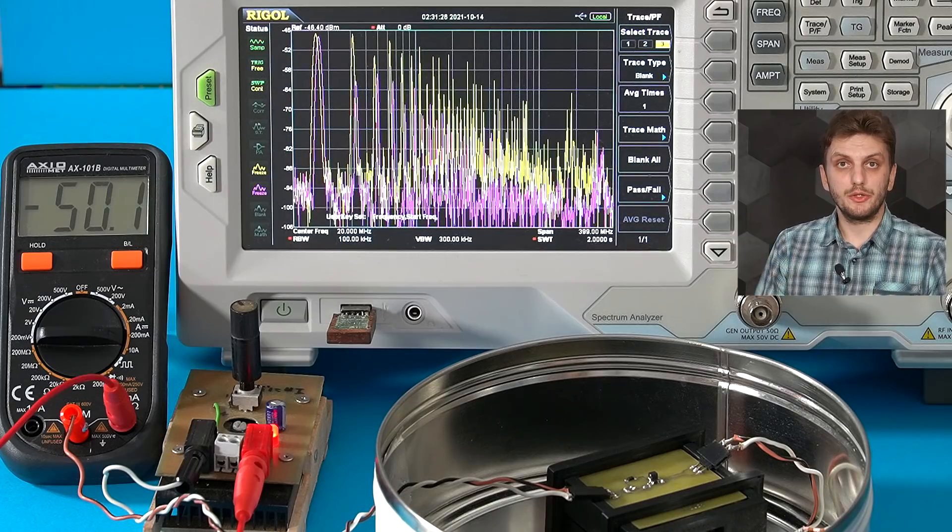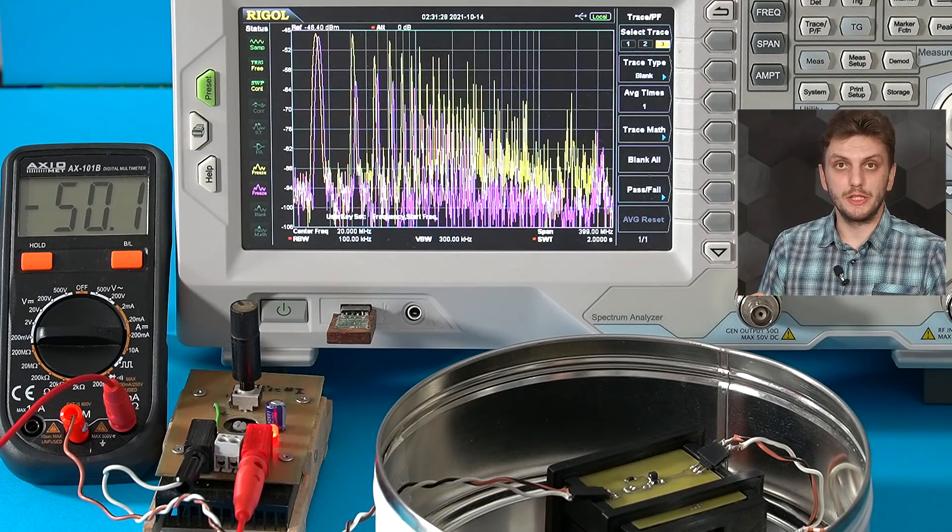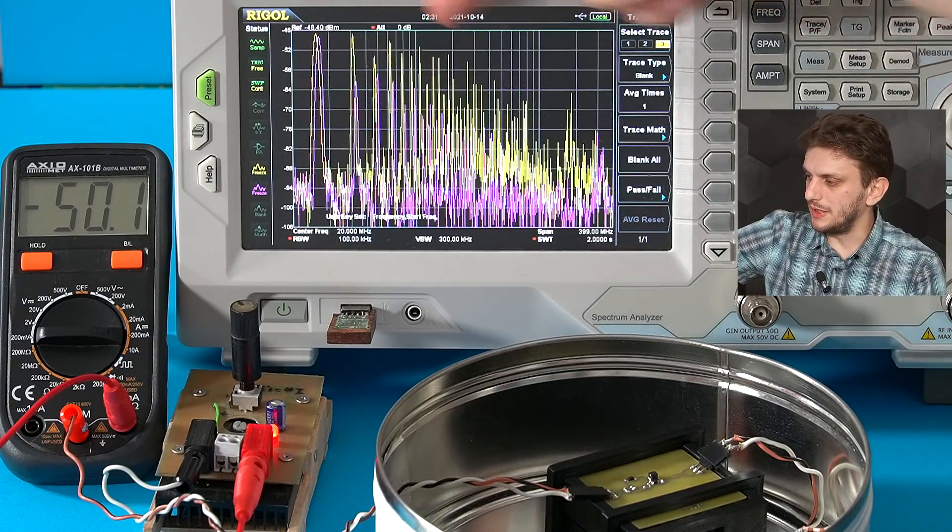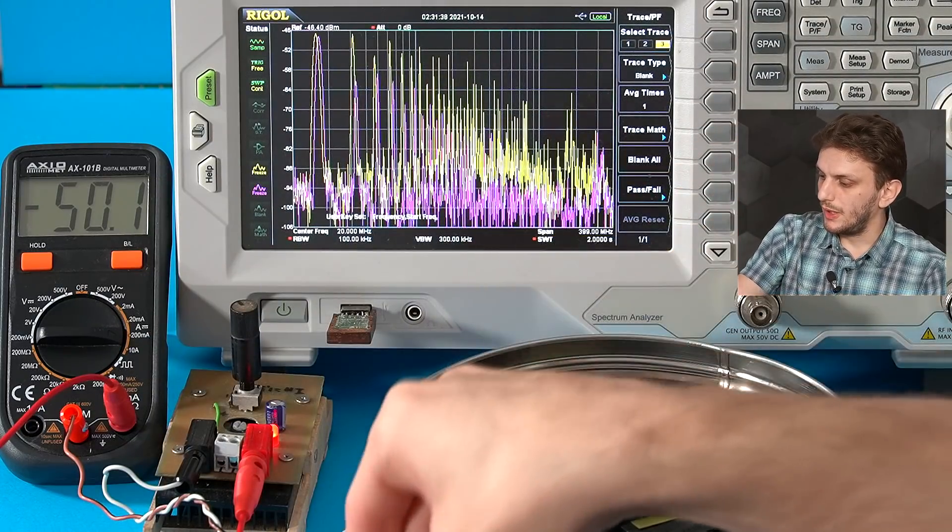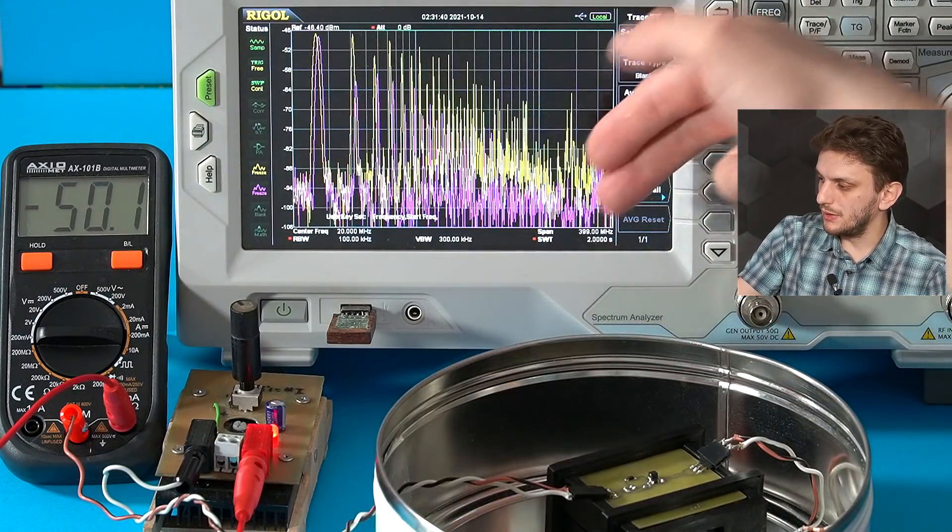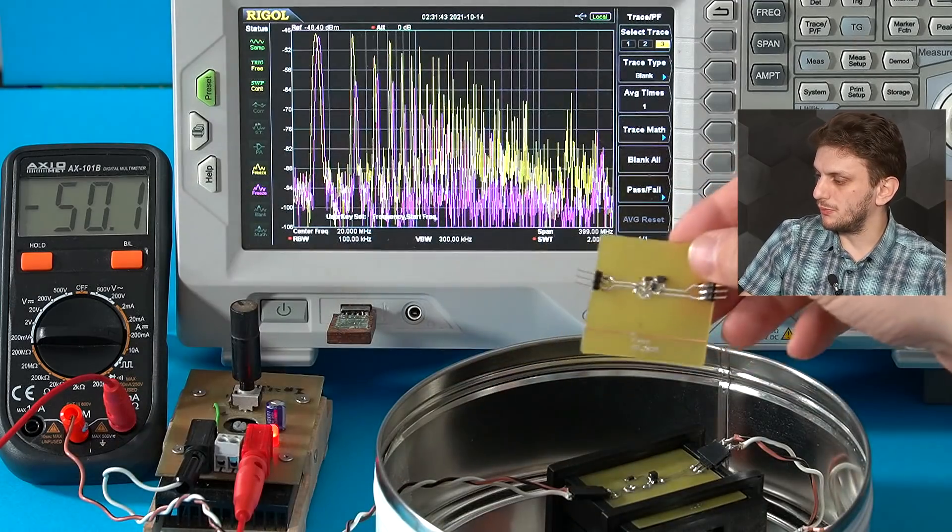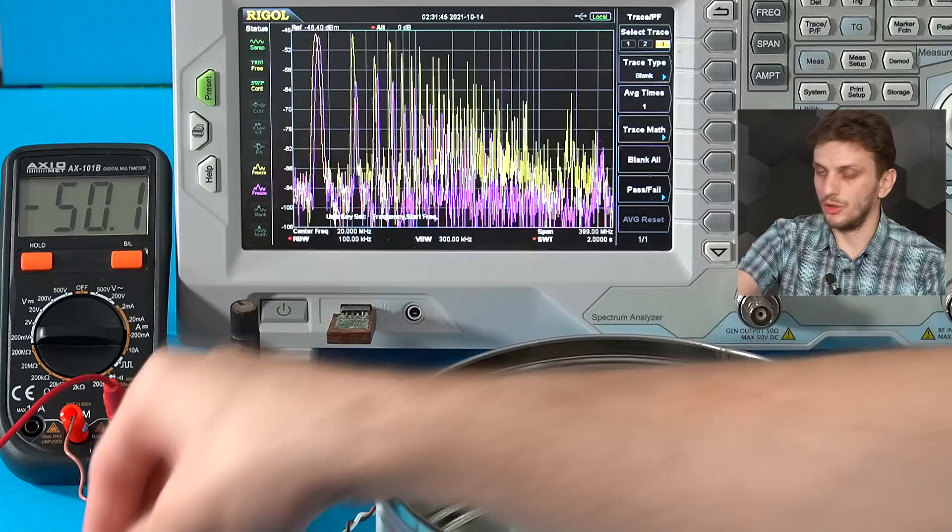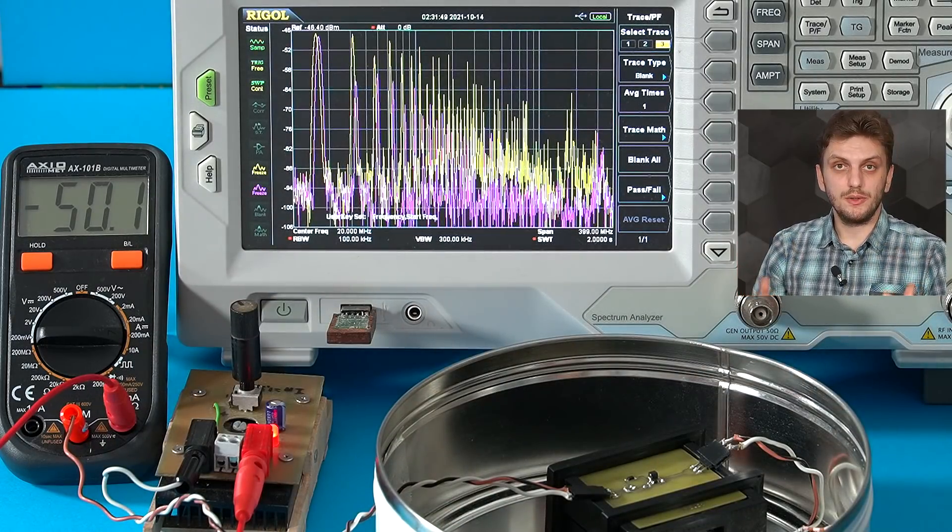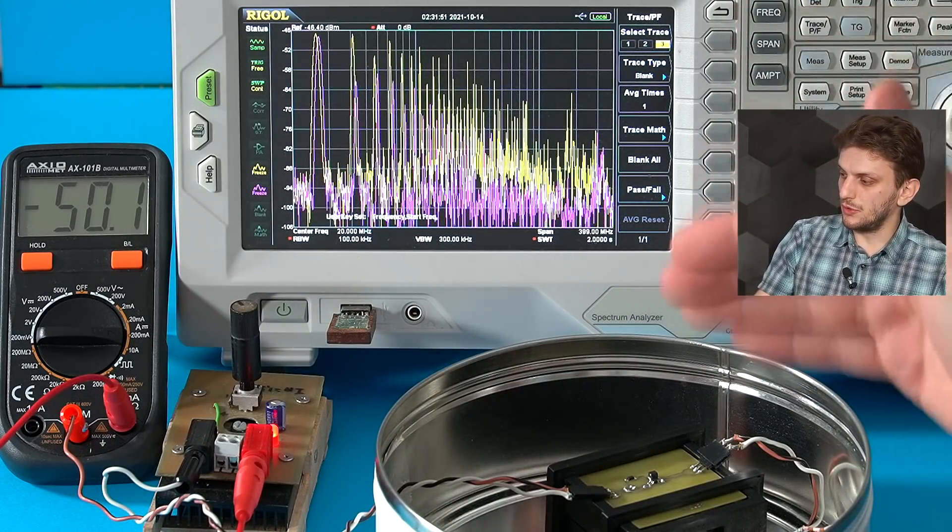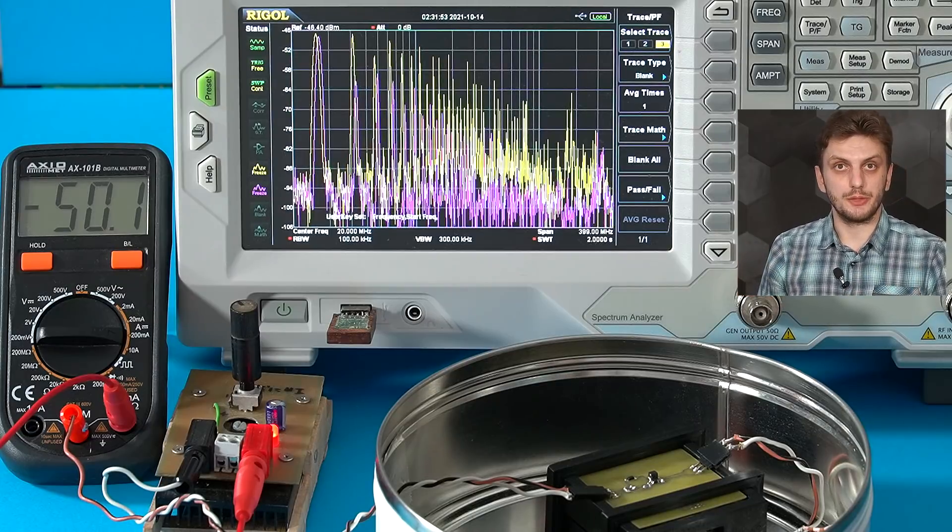So for this, I already prepared the two initial measurements. So we can see in yellow the emissions coming from the board that has all of the loops large. And we see in pink the noise coming from the board that has all of the loops small. So these are our two extremes.